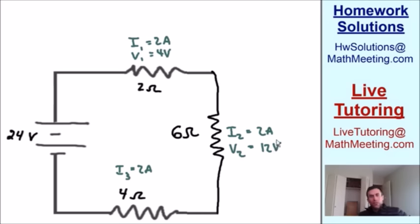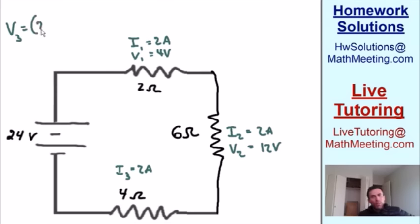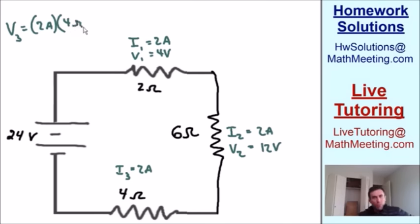For the third resistor: the voltage across resistor 3 equals 2 amps multiplied by 4 ohms, which equals 8 volts.